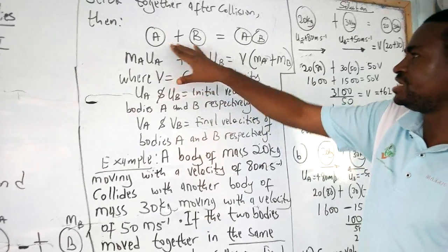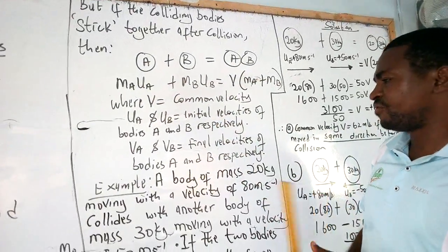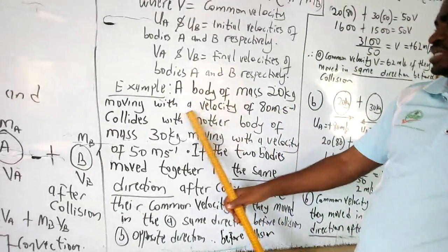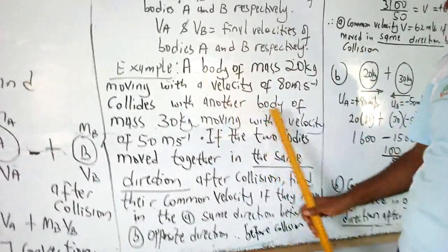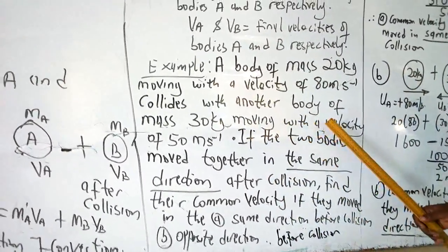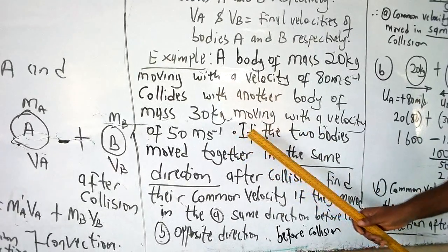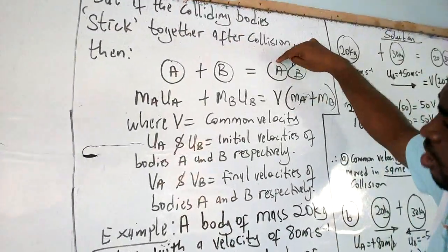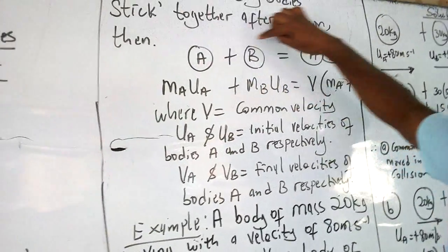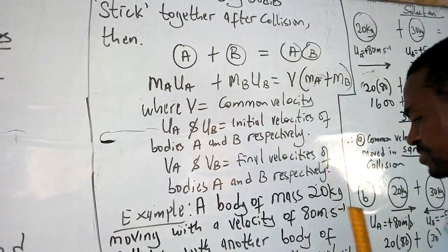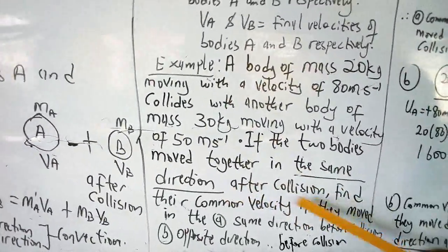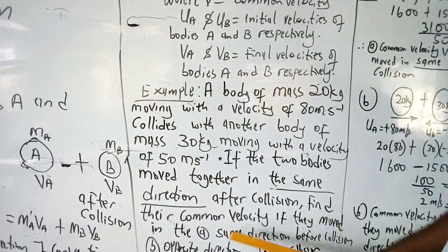Look at this example: a body of mass 20 kilograms moving with a velocity of 80 meters per second collides with another body of mass 30 kilograms moving with a velocity of 50 meters per second. If the two bodies move together after collision, find their common velocity — (A) if they move in the same direction before collision, (B) if they move in opposite directions before collision.